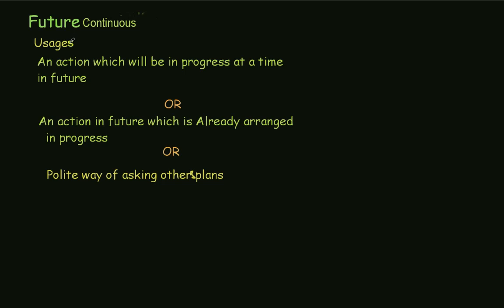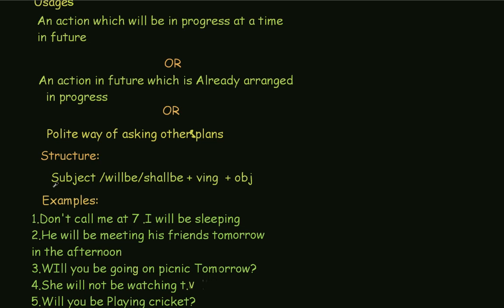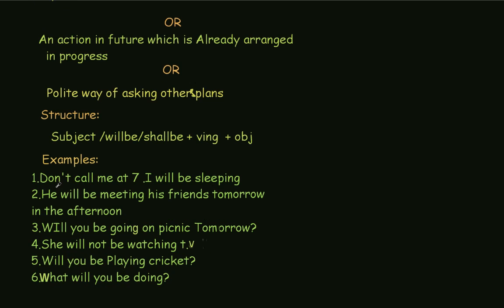Now let's see the structure of future continuous. The structure is: Subject + will be / shall be + fourth form of verb + object. Now let's look at some examples.